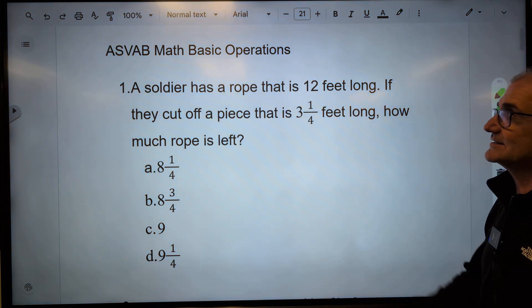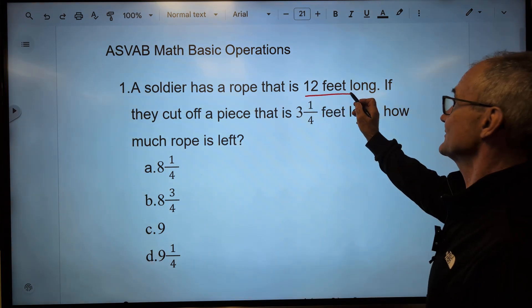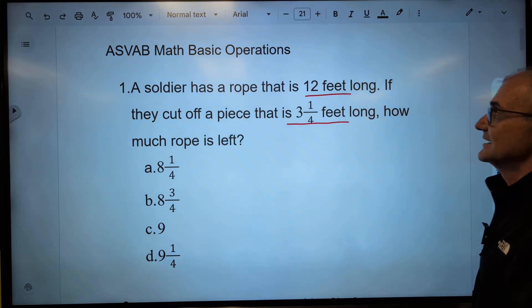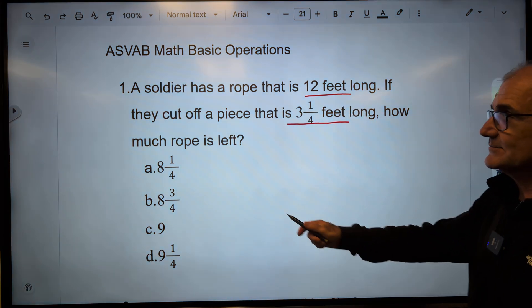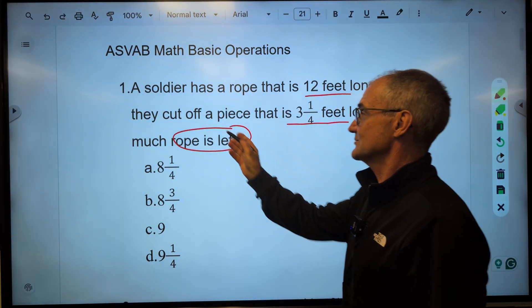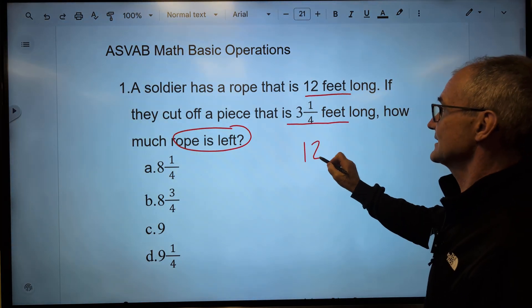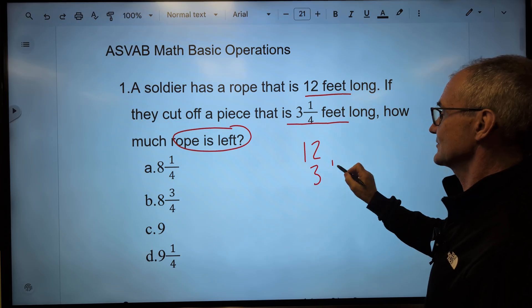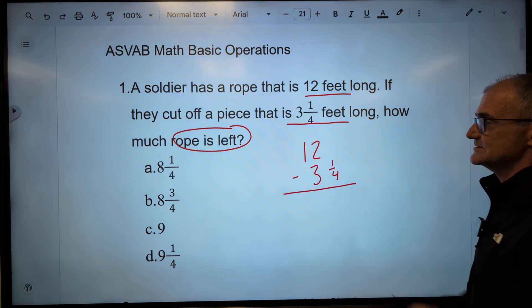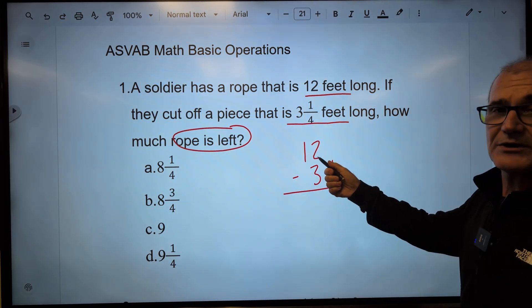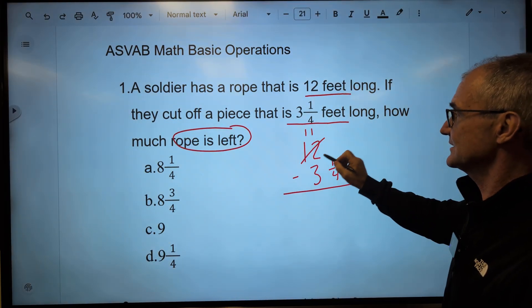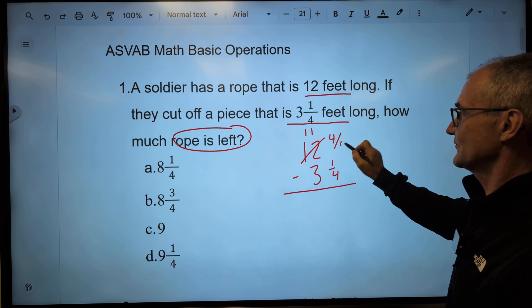Okay, hopefully you gave this a try. A soldier has a rope that is 12 feet long, and they cut off a piece that is 3 1/4 feet long. I notice my units are the same. How much rope is left? So what I am saying is 12 feet minus 3 1/4 feet.